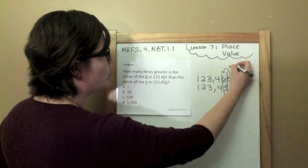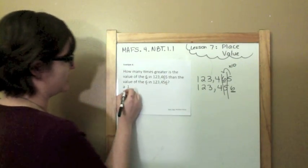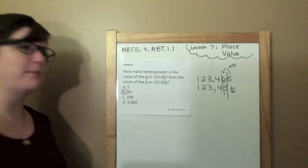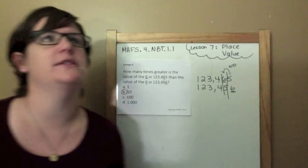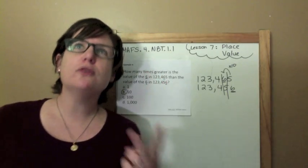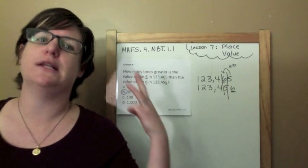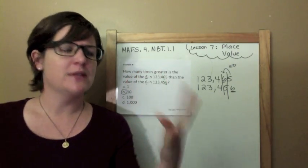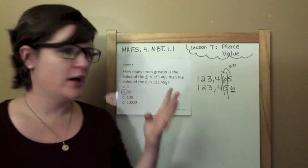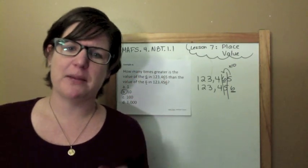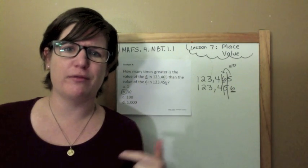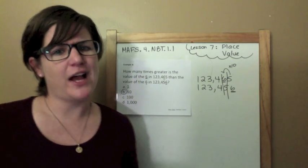This is so weird — times 10 in example 1, times 10 in example 2, times 10 in example 3, times 10 in example 4. I'm going to make a prediction that example 5 also has times 10. Let's go see.